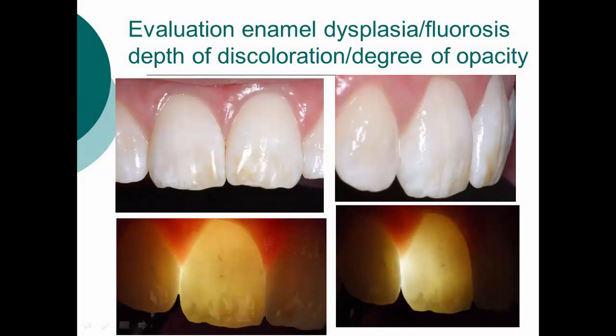We can also use fiber optic transillumination to evaluate enamel dysplasia, fluorosis — to look at the depth, discoloration, and degree of opacity. It'll help us decide whether aesthetic modification will be composite or porcelain veneers, or whether we can use micro or macroabrasion to remove a superficial layer of enamel. If the enamel has very deep, opaque white stains, this transillumination will show us it's a deeper stain, and a restorative solution is better than the minimally invasive macro and microabrasion solution.